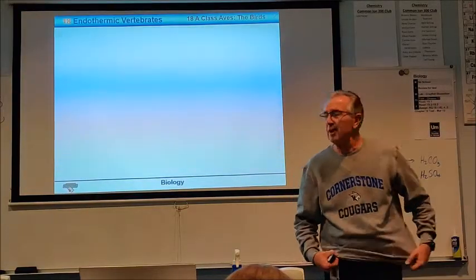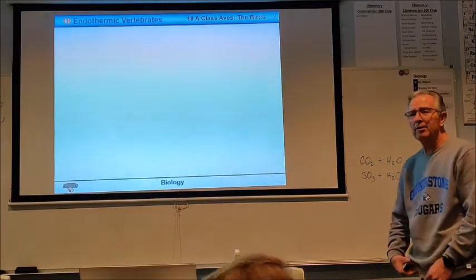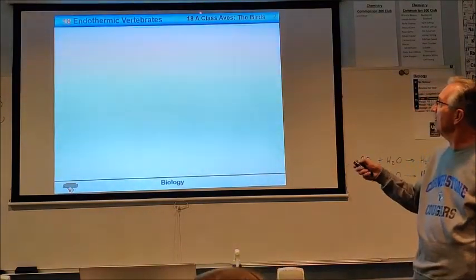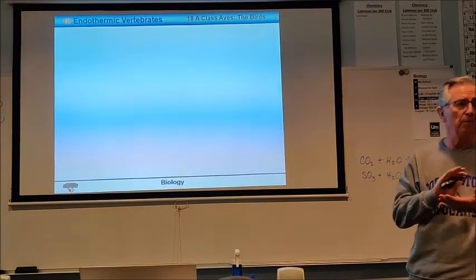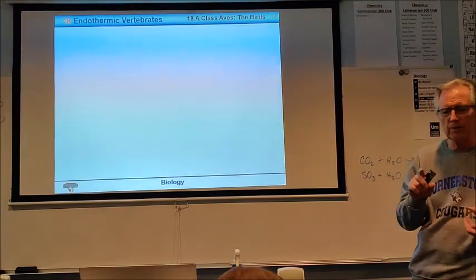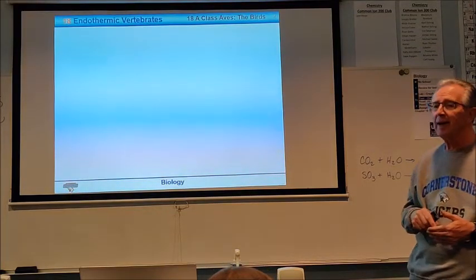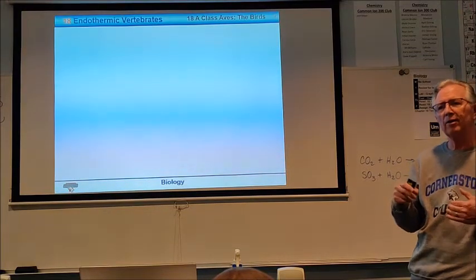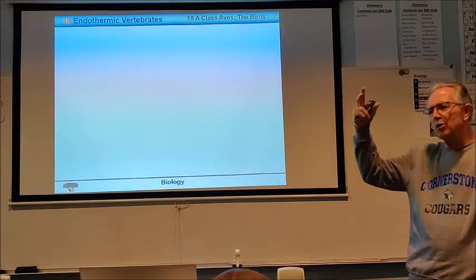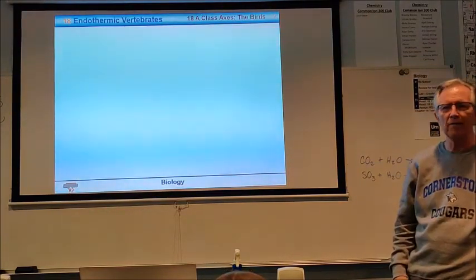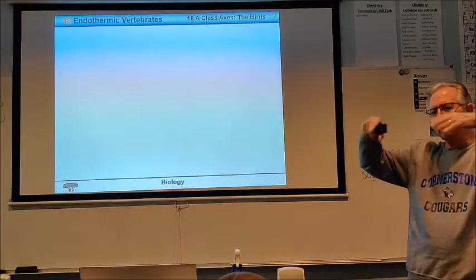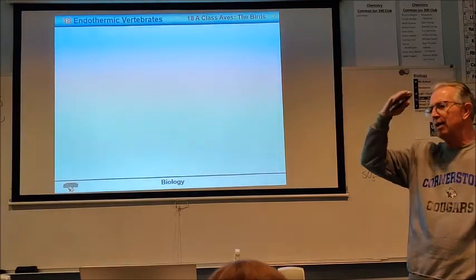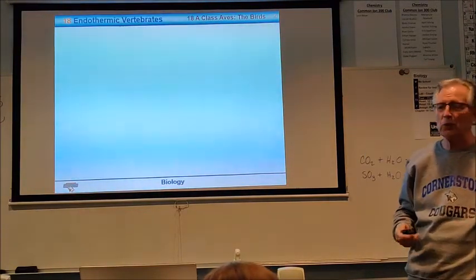Chapter 18 is endothermic vertebrates. They generate their own body heat. We're going to start with birds, the first ones we're going to study. They're in the class Aves. You've probably heard of an aviary where they have birds. At the zoo, they have the aviary where different kinds of birds live. They make it so the birds are free to fly around and do their own thing.